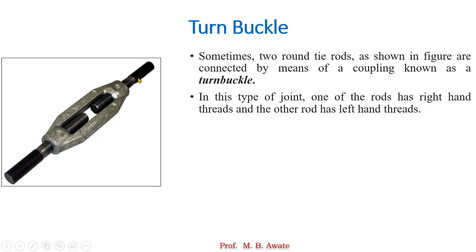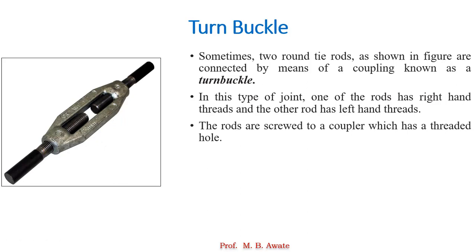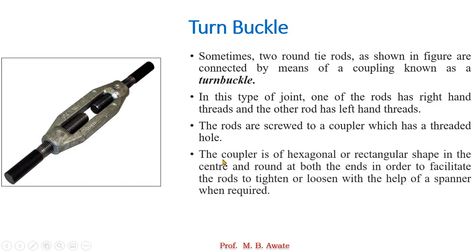In this type of joint, generally these two rods which are to be connected — one of the rod is having left hand thread and the other is having right hand thread. The coupler connecting these two rods is having a threaded hole. The coupler is of hexagonal or rectangular shape in the center and it is round at both the ends in order to facilitate the rods to tighten or loosen with the help of a spanner whenever it is required.